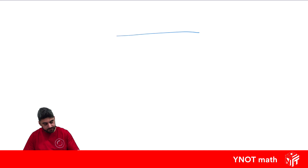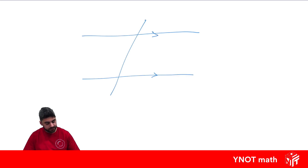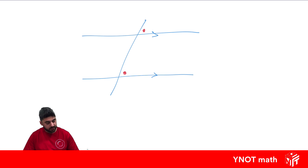Let's look at another one — two more parallel lines and a transversal. These two angles will also be equal, and you can see they're both on the same side of the parallel lines — like they're both above the parallel lines — and they're on the same side of the transversal. We call these corresponding angles, and corresponding angles are equal.